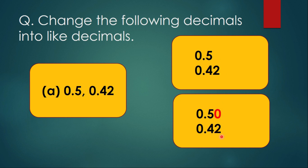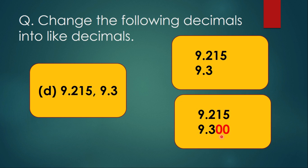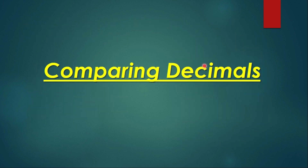Let us see one more example. We have 9.215 and 9.3. As you can see, 9.215 has three digits in the decimal part and 9.3 has only one digit. So we insert two zeros into 9.3, making it 9.300. Now both numbers have three digits in the decimal part. This is how we convert unlike decimals into like decimals. Now let us move on to comparing decimals and arranging them in ascending or descending order.